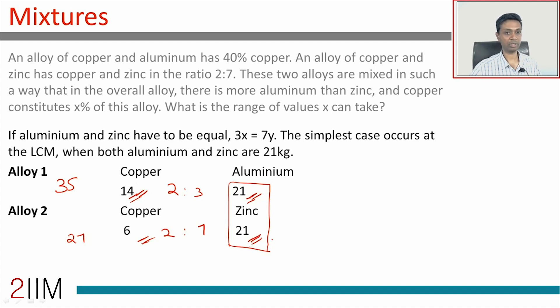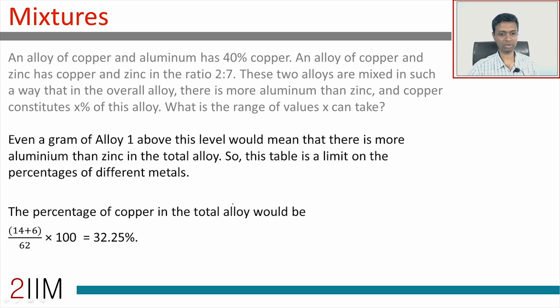Let's go back to thinking about when will aluminum be greater than zinc. Even a gram of alloy 1 more than this level will take us to a higher point where there is more aluminum than zinc. So what is the minimum quantity of alloy 1 that we can have to have more aluminum than zinc? Very simple, it's this quantity, where both are 21.